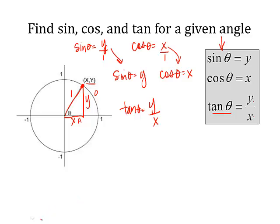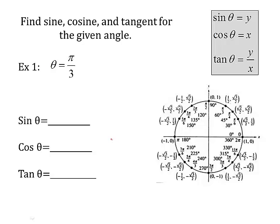Okay, so refer back to this if you can't remember why sine is y, why cosine is x, and tangent is y over x. All right, so let's do this. The problem says find the sine, cosine, tangent for the given angle. Well, here's the angle theta. It's π over 3.